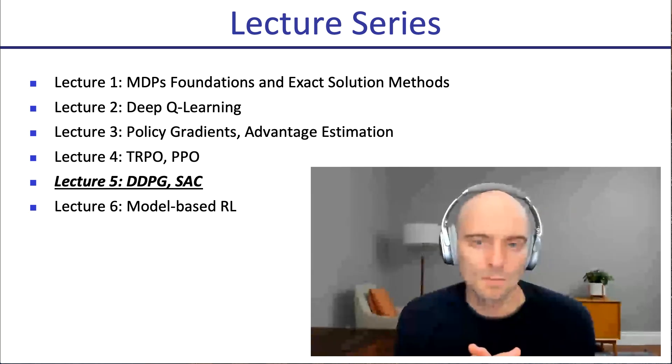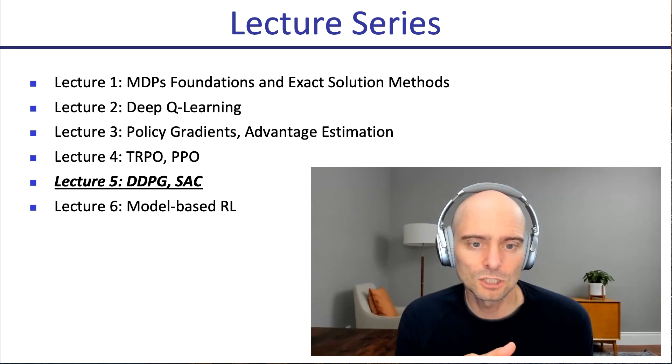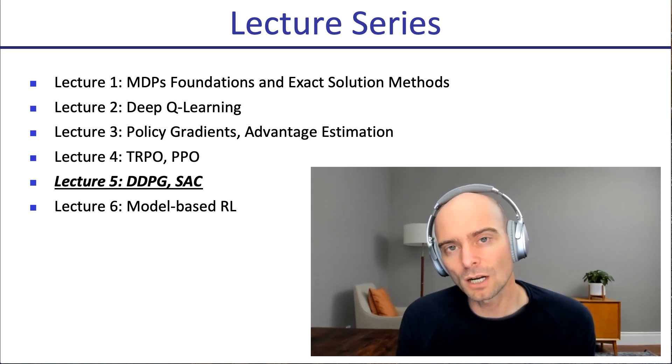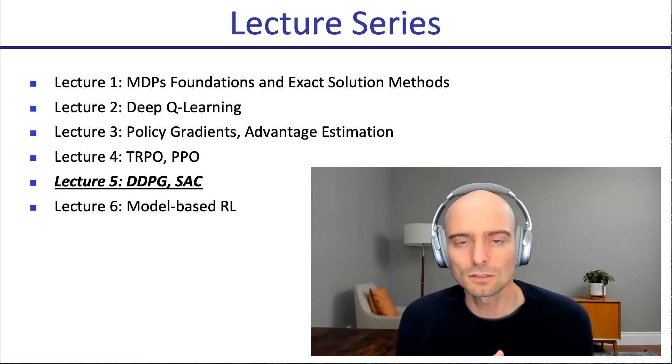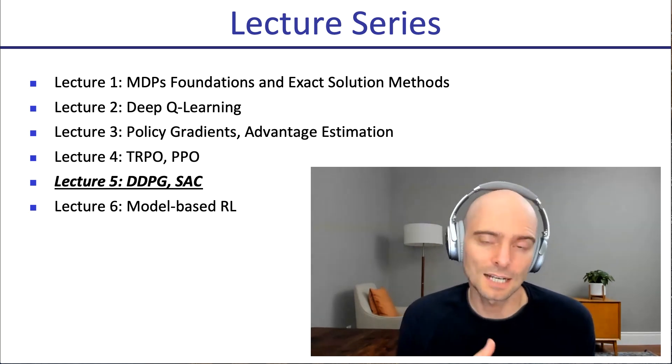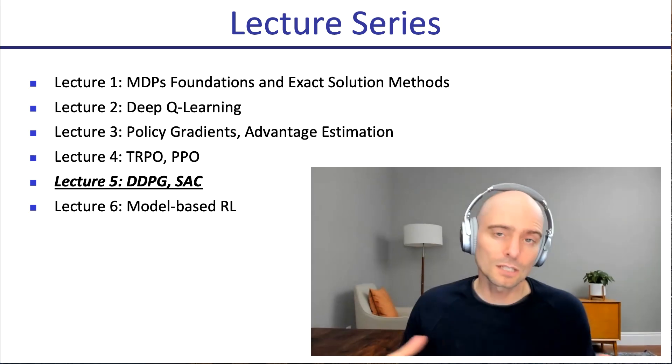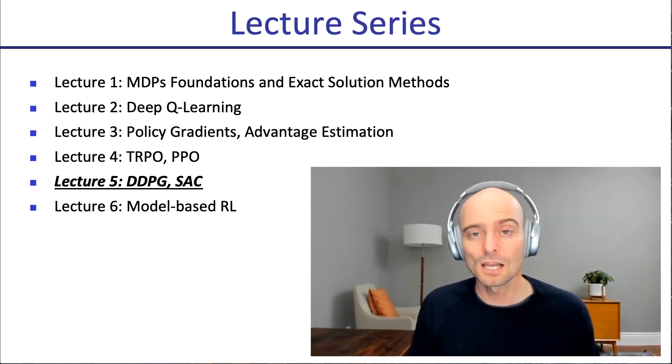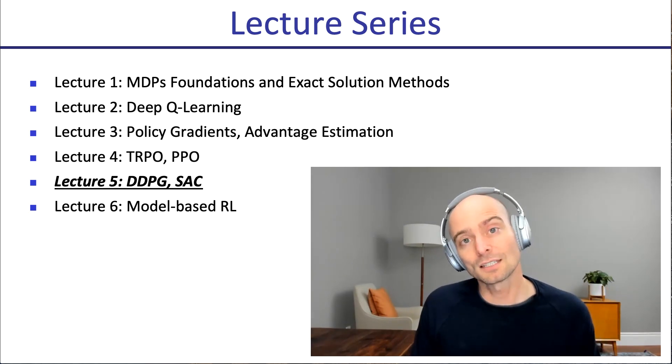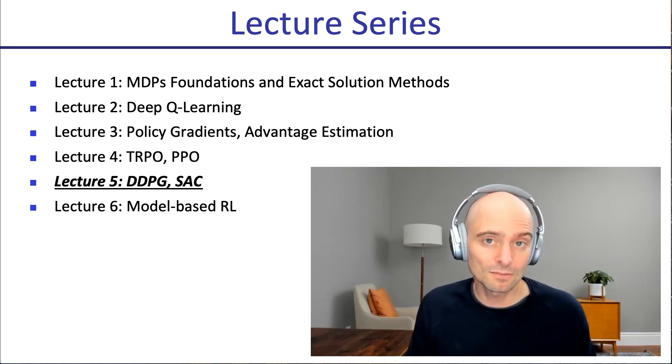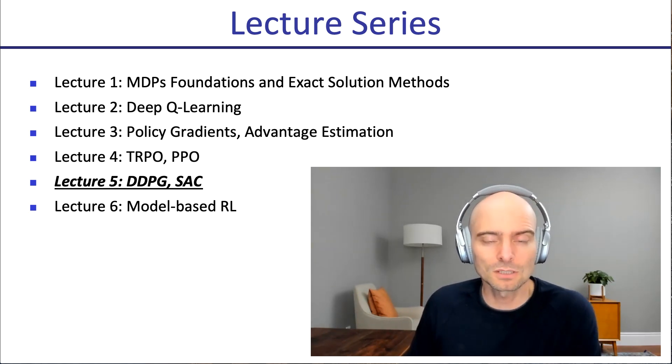But if you do care about sample efficiency, then often you might have a preference for the methods we'll see in this lecture here, DDPG and SAC over PPO, because they will reuse the data that's collected from the past more. They'll reuse it more often, so do more gradient updates per data collected, which allows the neural network to extract more information from the data collected and hence learn more from less data. If you look at learning curves with horizontal axis sample complexity, vertical axis performance, you see that often SAC and DDPG will have very good sample complexity.